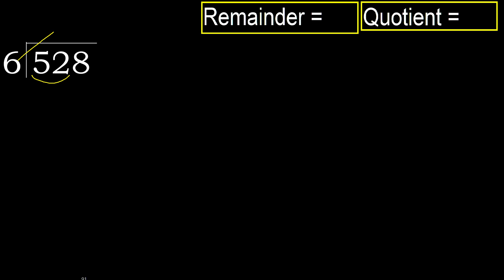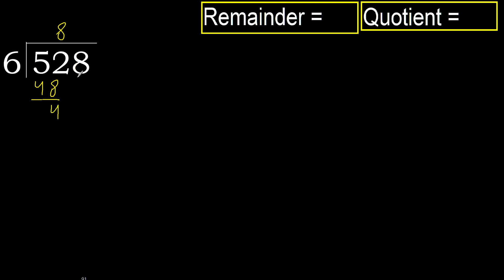Multiply by 9: 54, 54 is greater. Multiply by 8: 48, 48 is not greater, ok. Subtract. Next: 48. Multiply by 8: 48 is not greater, ok. Subtract.